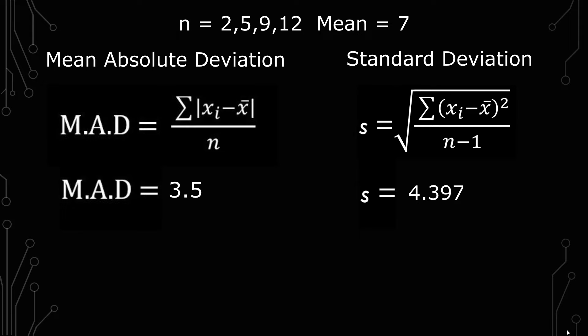So you're looking at all these numbers and saying, OK, the mean absolute deviation is 3.5 and I can see that with the numbers given. Whereas with the standard deviation, you're doing like two extra steps and you eventually get 4.397. And like, what even is that?